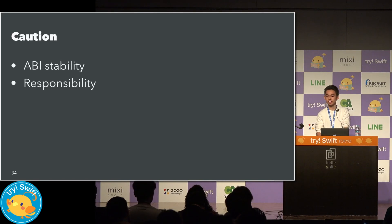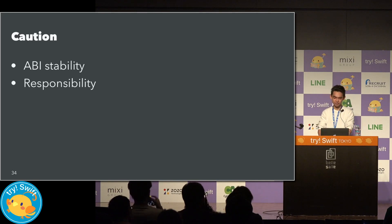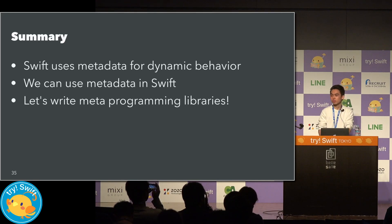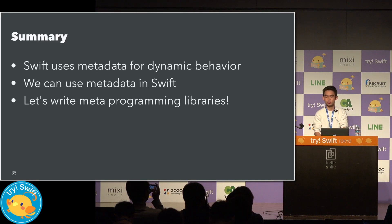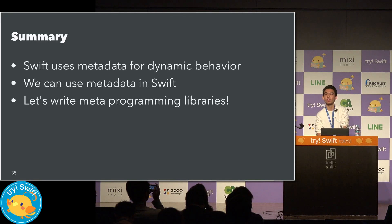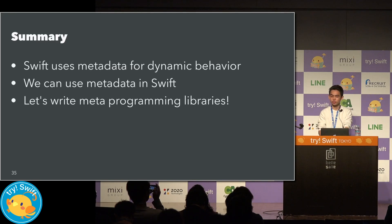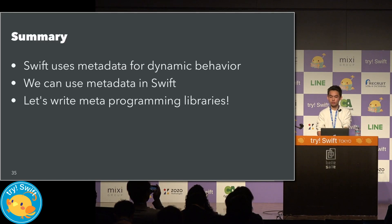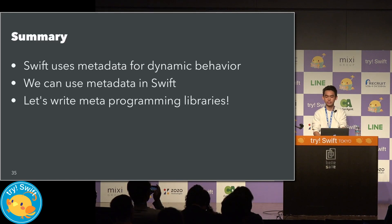With great power comes great responsibility. Let me wrap up. First, Swift uses metadata for dynamic behavior like dynamic method dispatch, reflection API, and so on. Second, we can use it in Swift by reproducing the memory layout, and it brings big benefits and is just fun. I'm looking forward to your great library using metadata. That's all. Thank you very much.